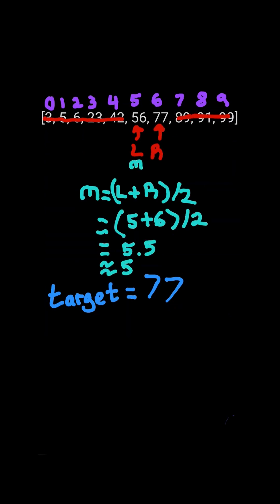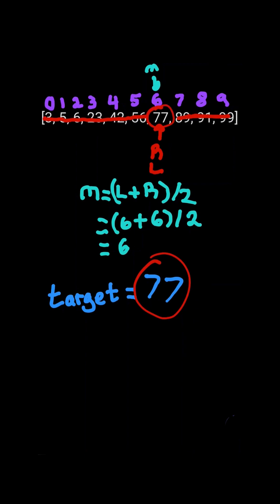Mid points to value 56, so 77 must appear to the right of 56. So we update our L pointer to M plus 1. Now mid points to the value we are looking for.